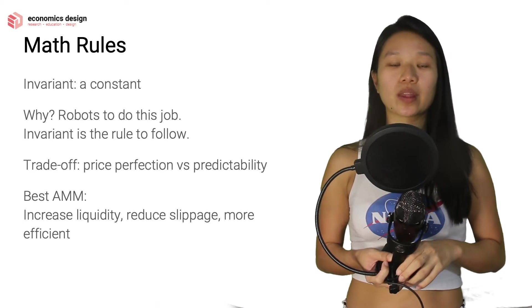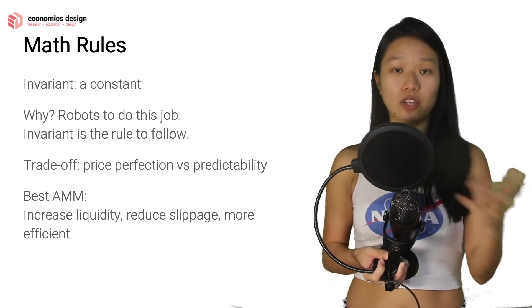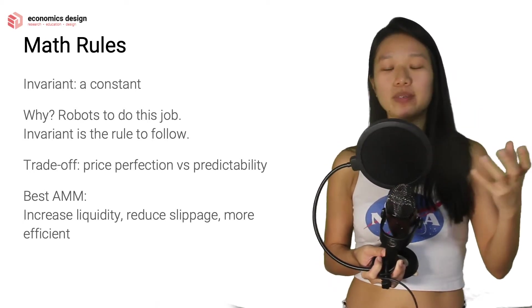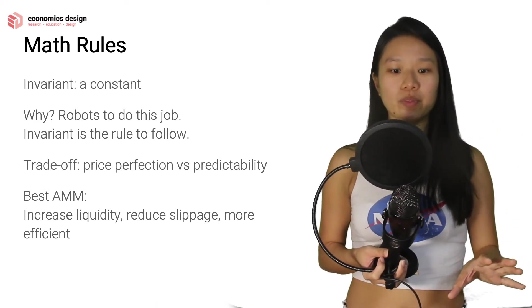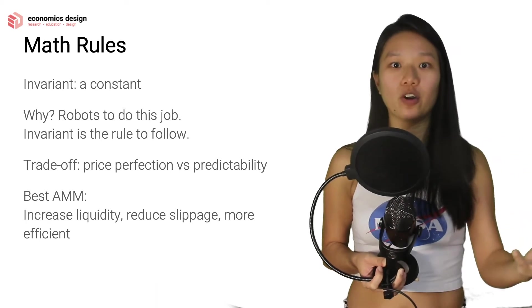So why do we want an invariant? Well, firstly, because we said that humans are not involved anymore or humans have very little involvement, robots will be doing the job, robots will be executing.